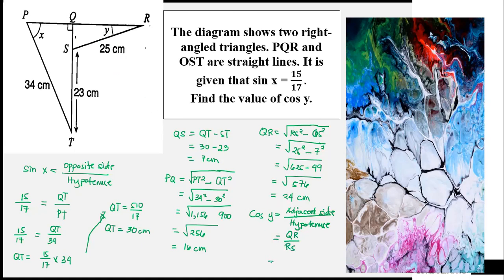QR equals 24 divided by RS equals 25. We cannot reduce this to simplest form, so cosine y is 24 over 25. Thank you for watching, God bless.